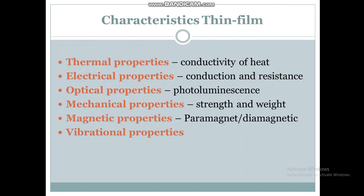The different properties of thin film that can be measured or observed include thermal properties such as heat conductivity, electrical properties like conduction of current or resistance, optical properties like photoluminescence, mechanical properties like strength and weight, magnetic properties such as whether it is paramagnetic or diamagnetic, and vibrational properties.